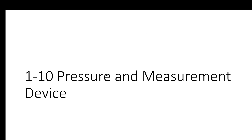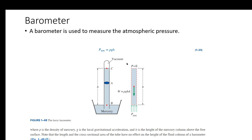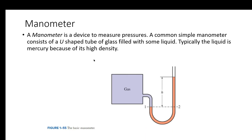Pressure measurement devices: a barometer is used to measure atmospheric pressure. You can determine atmospheric pressure from the density of the fluid, gravitational acceleration, and the height to which the fluid is pushed up into the tube. A manometer uses a similar concept to find the pressure of a gas.